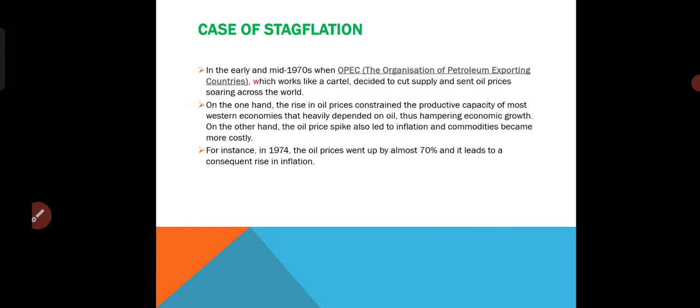Whichever countries are more dependent — for example, western economies that are highly dependent on petrol or oil — in that time, definitely those particular economies are going to be affected more. The oil price spike also leads to inflation as commodities become more costly. For instance, in 1974, oil prices went up by almost 70% and led to a consequent rise in inflation. When the supply of commodities reduces, definitely the price of commodities goes very high. That is what took place in 1974.